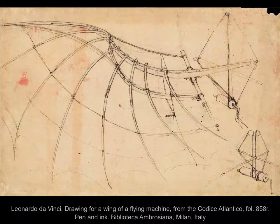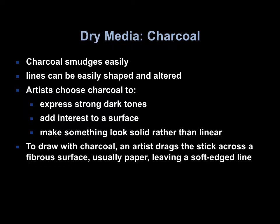For centuries, artists have created drawings as a way to visually represent ideas they have in their minds. In the 15th century, Leonardo da Vinci created a multitude of drawings to represent ideas he had for a wide variety of inventions and contraptions, such as a flying machine, pictured here. In this sense, da Vinci used drawing as a way to put his concepts into a more tangible form, without knowing whether or not the larger flying machine project would ever be manifested.